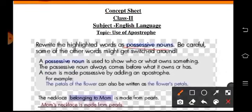So what is a possessive noun, children? A possessive noun is used to show who or what owns something. That means it shows the possession, it shows who owns or who has that particular thing, who this thing belongs to that particular person. The possessive noun always comes before what it owns or has.